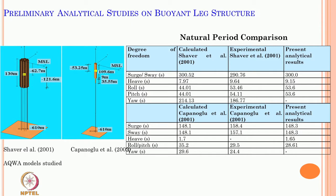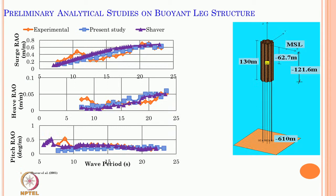Preliminary studies were done on a single buoyant leg structure taken from Shaver et al. and Kappanoglu. This was numerically modeled in ANSYS AQUA and natural periods were compared — what Shaver calculated, what Shaver showed experimentally, and the present analytical results — showing good comparison in almost all degrees of freedom. Comparison with Kappanoglu et al. in calculated, experimental, and present analysis also showed very close agreement for most cases. Once validated, the numerical model of BLS is used to understand the response amplitude operator directly obtained from the software.